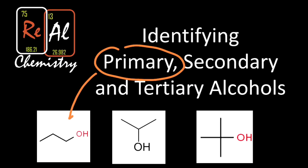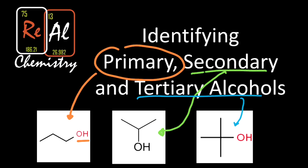Primary alcohols always look like this, where the OH group is at the end of an alkane chain. If you see the OH just tacked on the end with no substituents around it, that's always going to be a primary alcohol — the alcohol being at the one position. Secondary alcohols are when you have an OH group in the middle of an alkane chain. Tertiary alcohols are when you have an alcohol on a carbon that makes a cross structure.